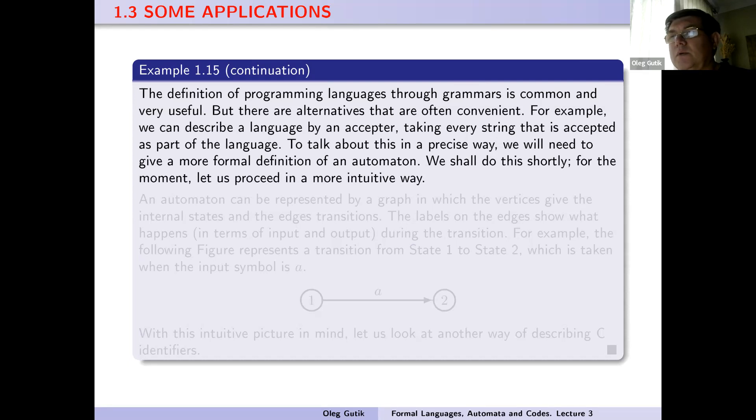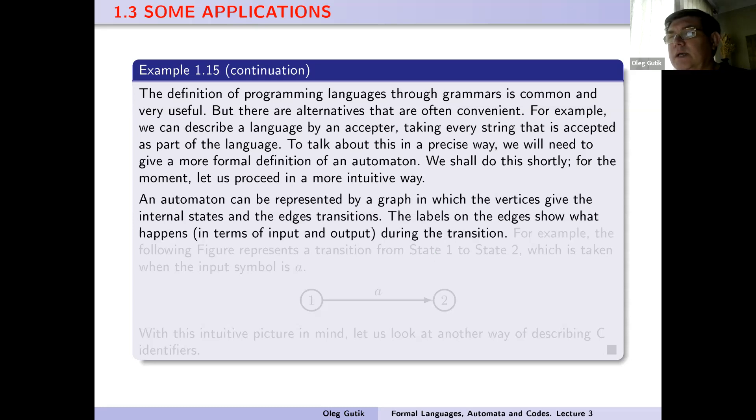An automaton can be represented by a graph in which the vertices give the internal states and the edges give transitions. The labels on the edges show what happens in terms of input and output during the transition. For example, the following figure represents a transition from state one to state two, which is taken when the input symbol is a.